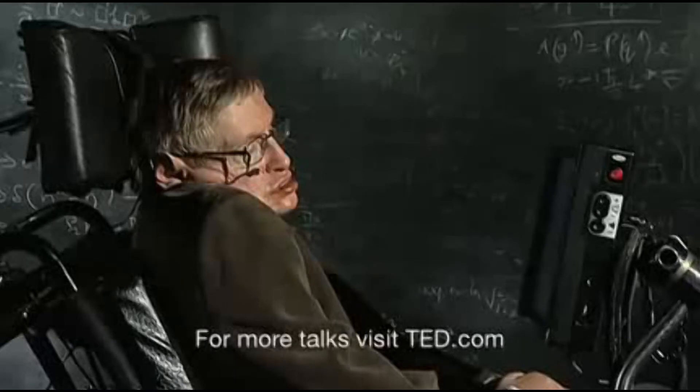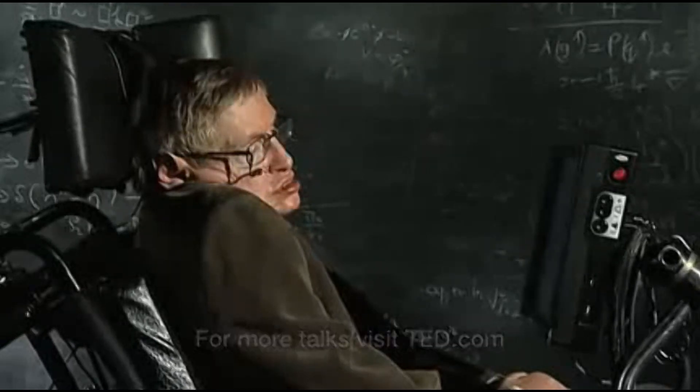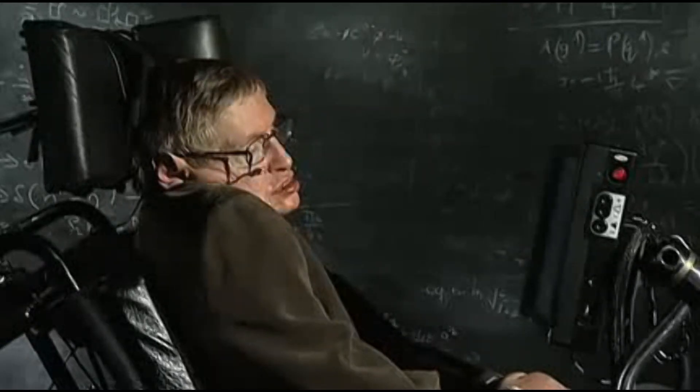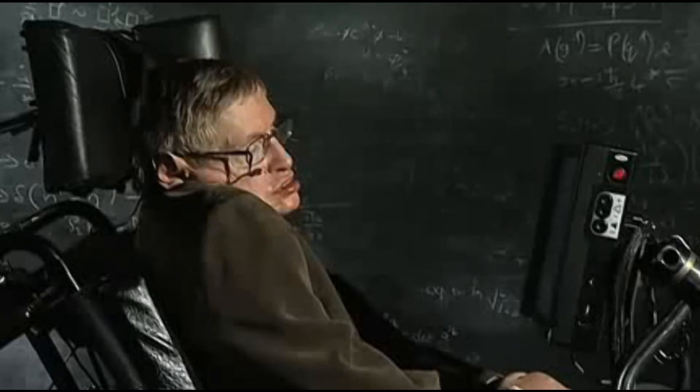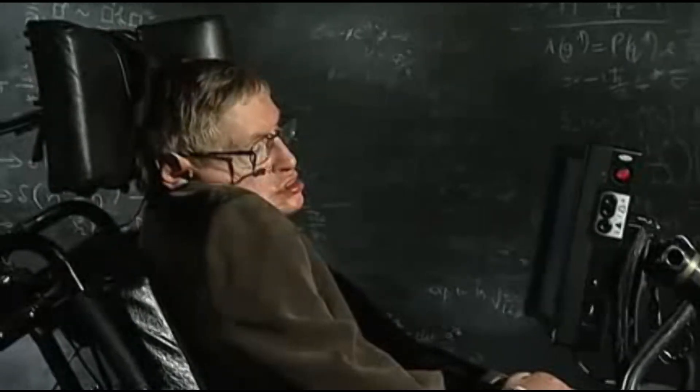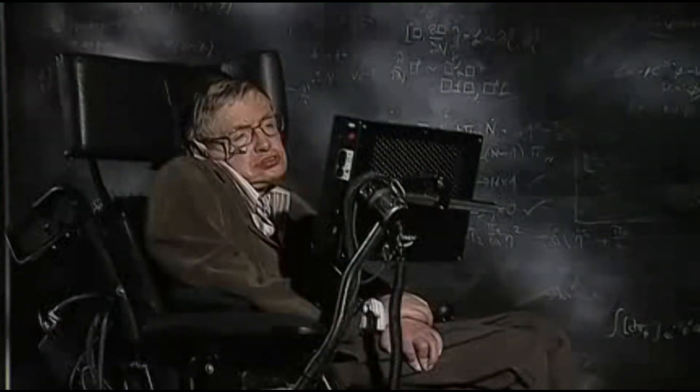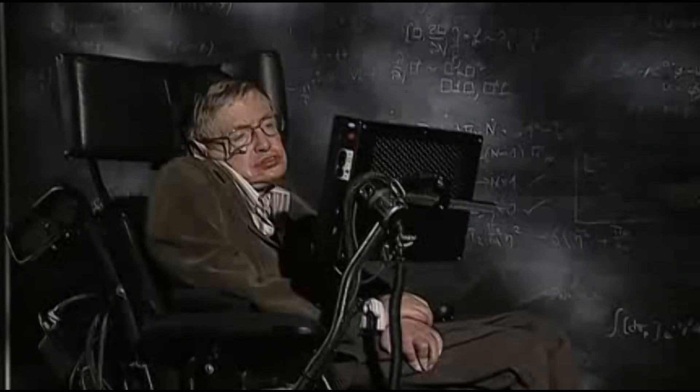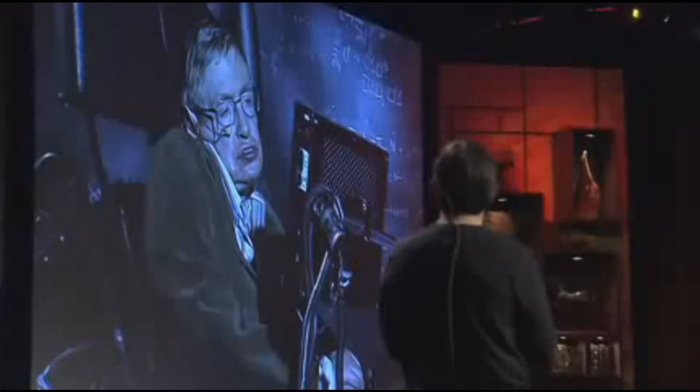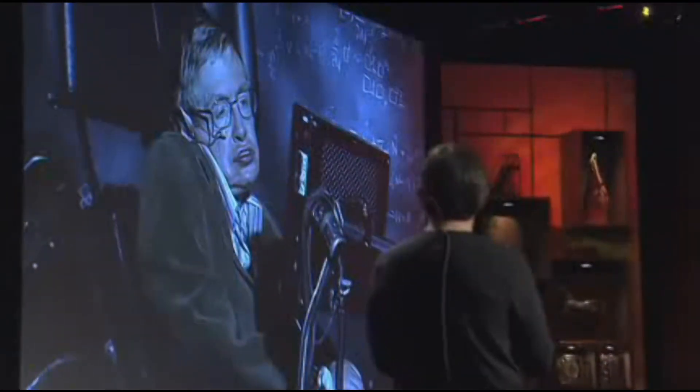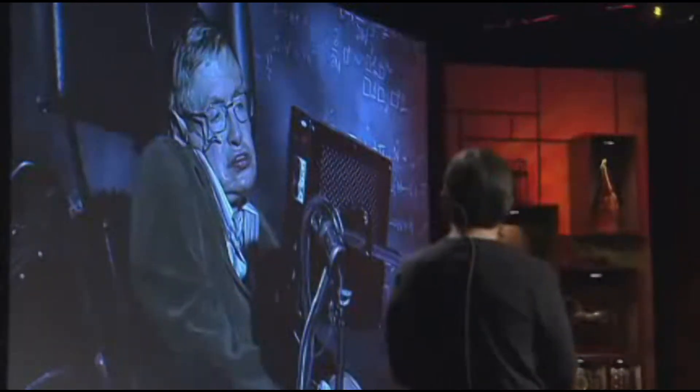The universe emerged from the Big Bang, the way it did. We used to think that the theory of the universe could be divided into two parts. First, there were the laws like Maxwell's equations and general relativity that determine the evolution of the universe, given its state over all space at one time. And second, there was the question of the initial state of the universe.